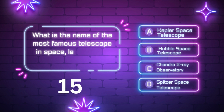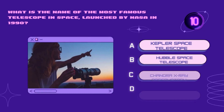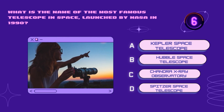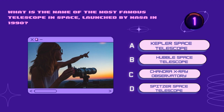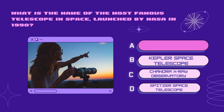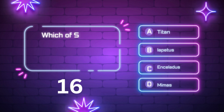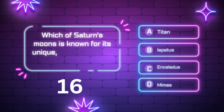What is the name of the most famous telescope in space launched by NASA in 1990? Kepler Space Telescope, Hubble Space Telescope, Chandra X-ray Observatory, Spitzer Space Telescope. Your time starts now. Right answer is Hubble Space Telescope.